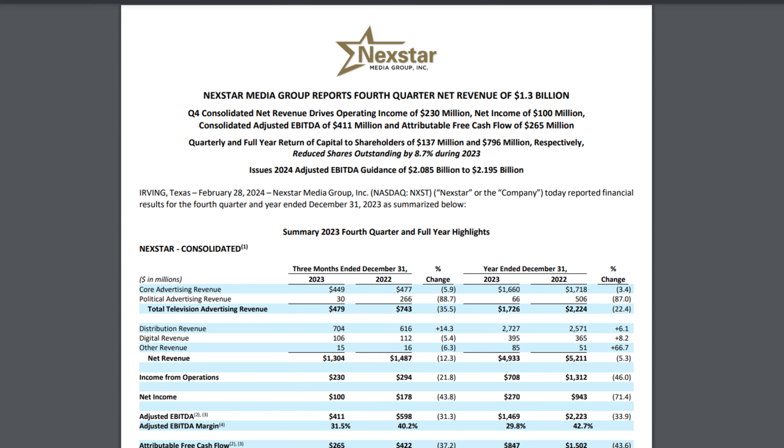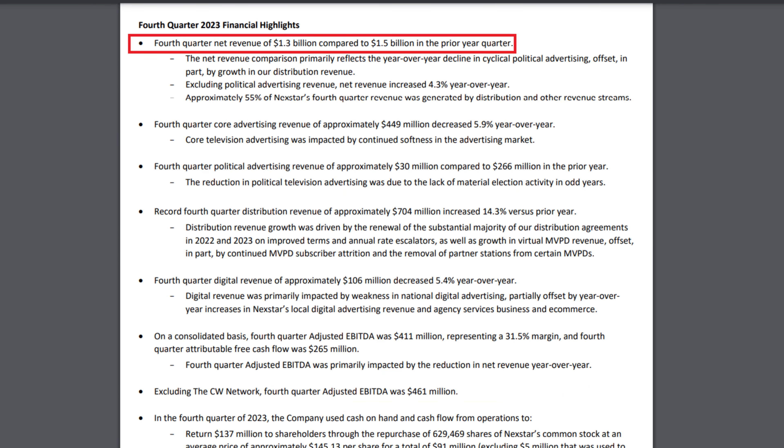Going over the latest earnings reports, we see the following. Fourth quarter net revenue was $1.3 billion down from $1.5 billion in the prior year. The net revenue comparison primarily reflects the year-over-year decline in cyclical political advertising.